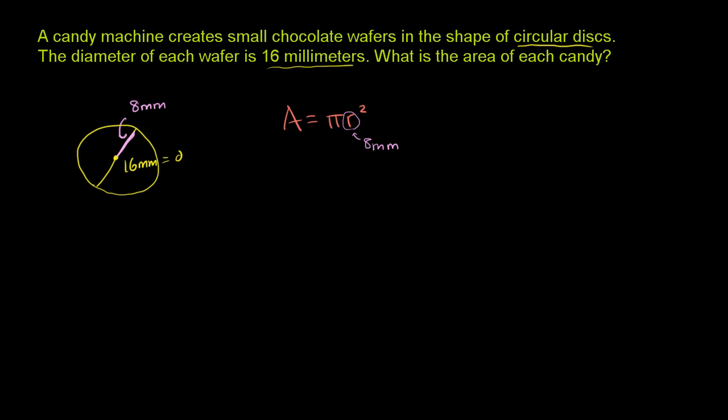So the area of our circle is going to be equal to pi times 8 millimeters squared. And I'll keep the units there, just so that we get the right units for area at the end.